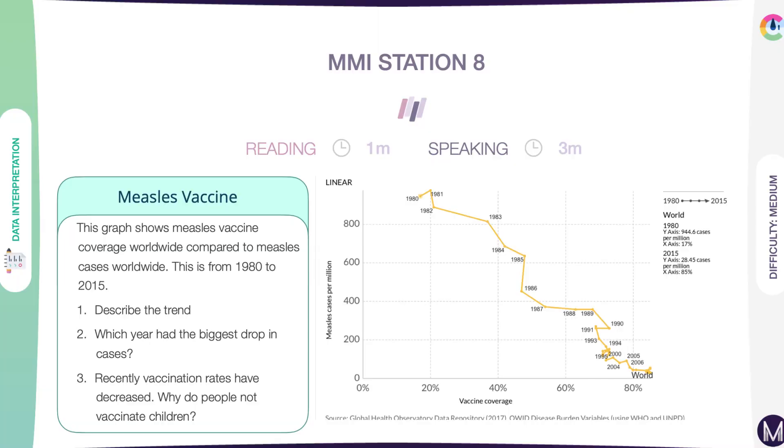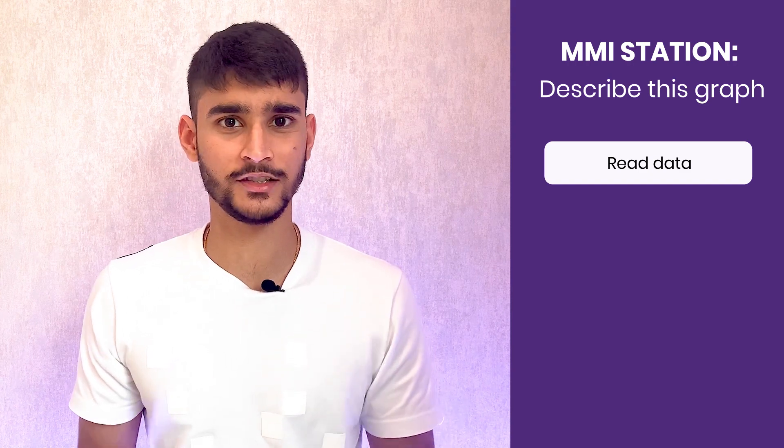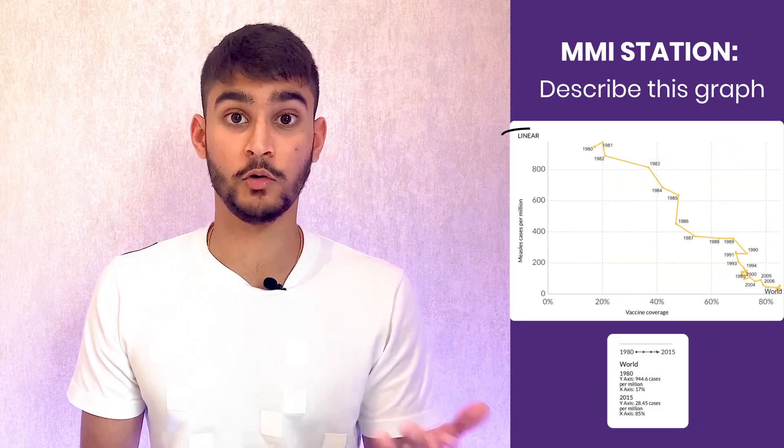Let's jump into a station — have a go at this question: describe what this graph shows. First, take some time to read the data, even if it's 20 to 30 seconds or up to a minute. Observe what you're looking at and identify the title and the axes for context. Start by introducing the graph in front of you — so first of all, identify what type of graph it is.